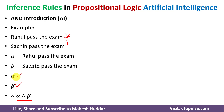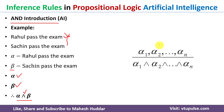So whenever we have two premises alpha and beta, we can introduce an 'and' statement: alpha and beta. In general, if we have alpha-1, alpha-2, through alpha-n, we can write the conclusion as alpha-1 and alpha-2 and ... and alpha-n. This is And Introduction.